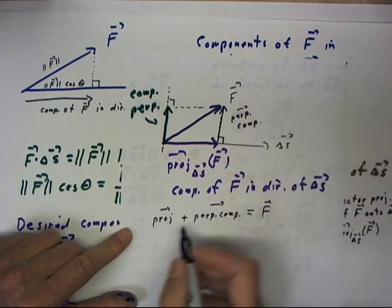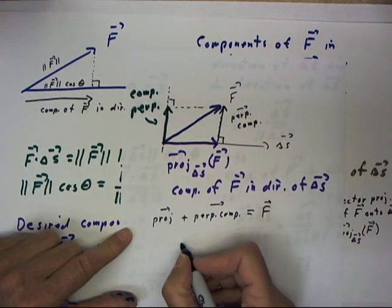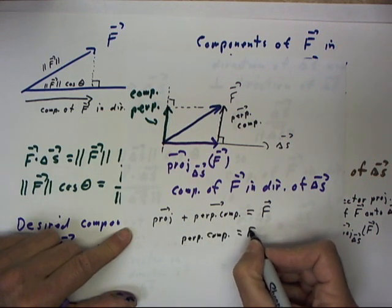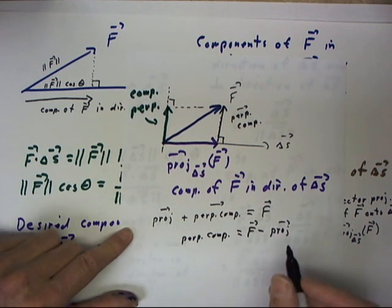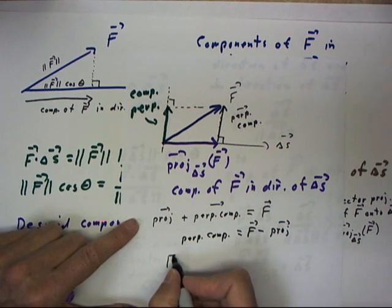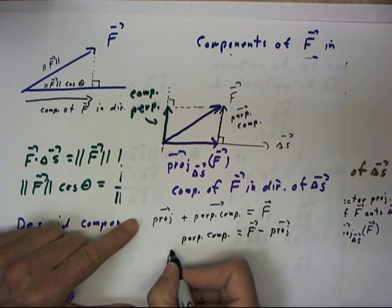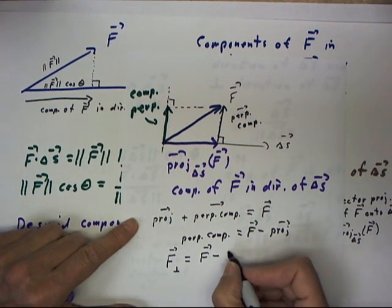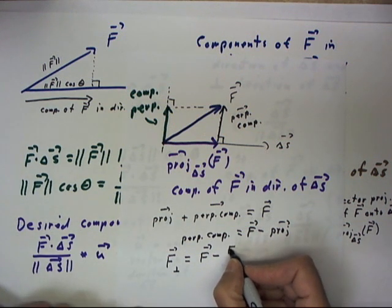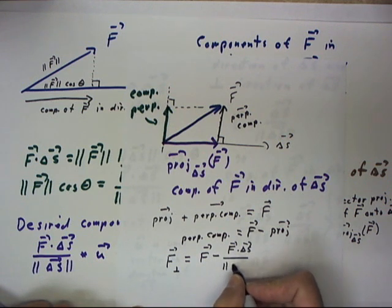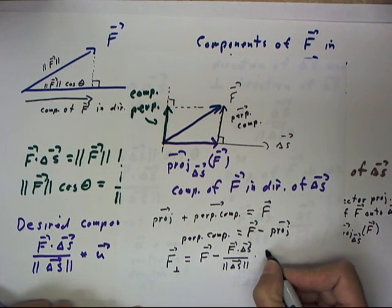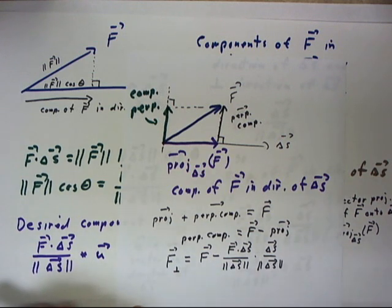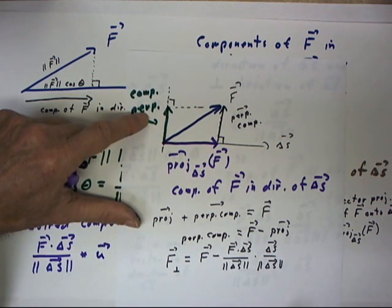Let's put a vector over perpendicular component and arrow to indicate that this is a vector, and it follows then that the perpendicular component equals f minus the projection. So we could write f perpendicular for the perpendicular component equals f minus the projection, remember the projection is just f dot delta s over magnitude of delta s multiplied by delta s over magnitude of delta s. And that gives us our perpendicular component.